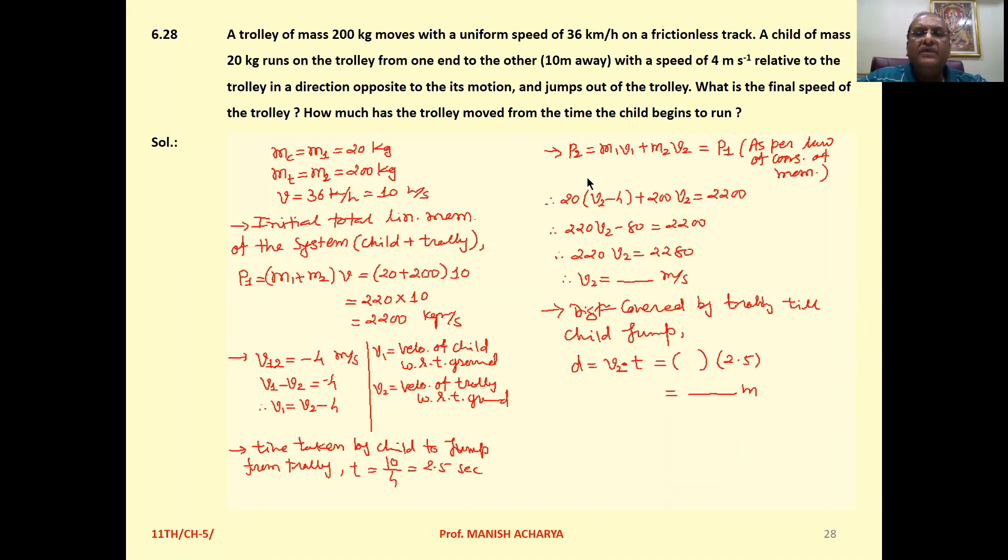The child starts running with speed 4 m/s, and that is the relative speed in the opposite direction of motion of the trolley.